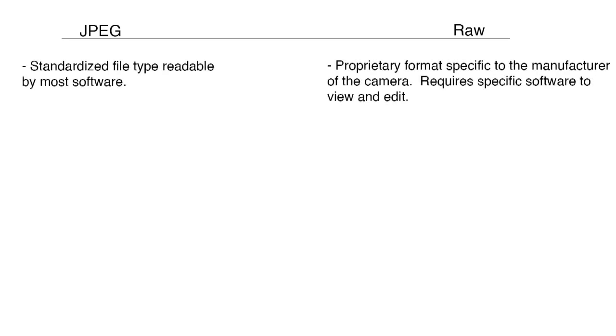A JPEG is a standardized file type readable by just about any kind of software, whereas RAW is a proprietary format specific to the manufacturer of the camera. This requires specific software to view and edit.